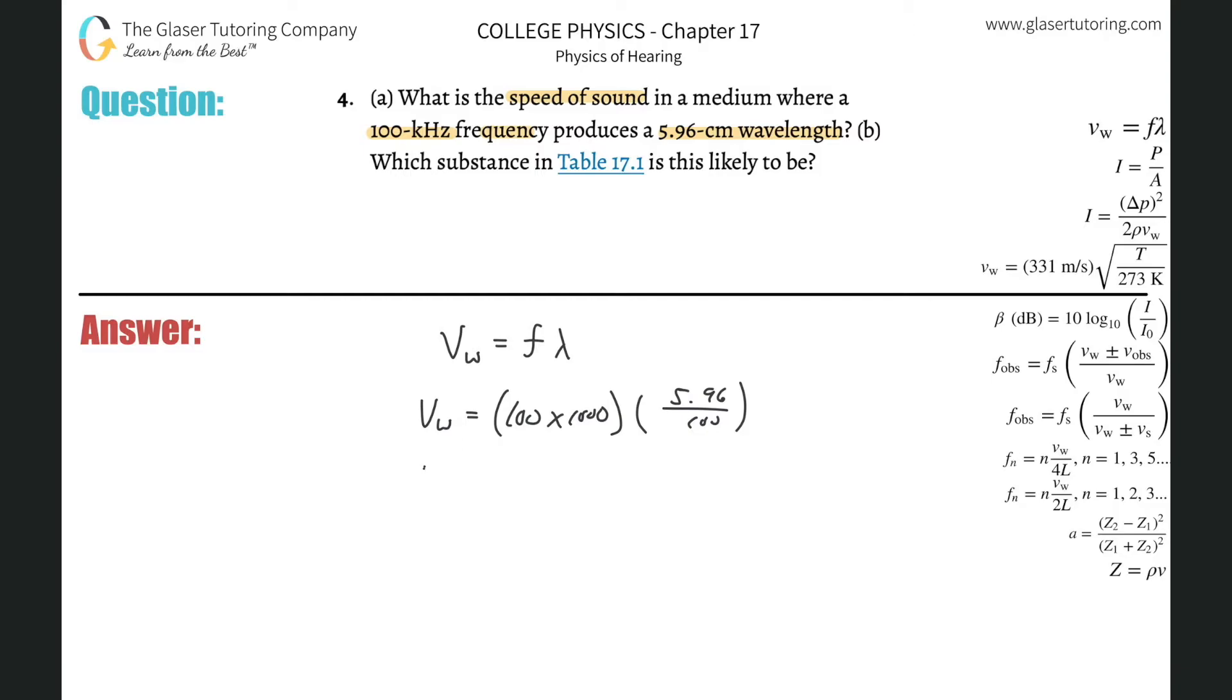And then we can simply calculate this. Throw it into the calculator. Basically the hundreds would simply cancel, and it'd be 5.96 times 1,000, which would simply be 5.96 times 10 to the third. And that is in meters per second. This is about 5,960 meters per second.